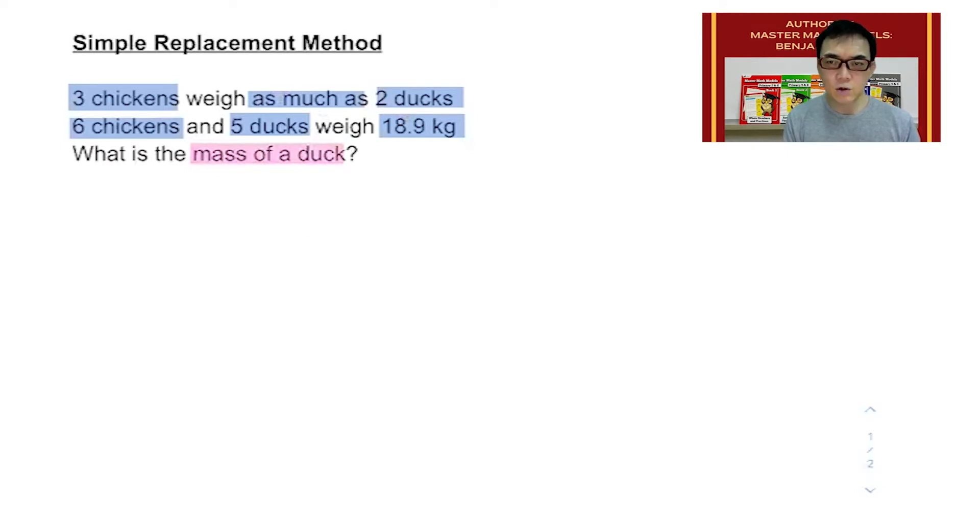The first thing we want to do is draw a model to represent 3 chickens. We simply draw 3 rectangles, break this into 3 portions, and each box represents 1 chicken. Since 3 chickens weigh as much as 2 ducks, they are equal.